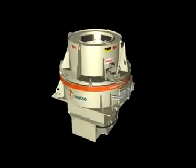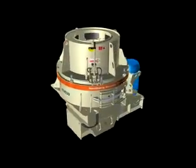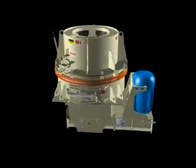What sets the Nordberg Barmak B-Series VSI apart from other types of crusher is that it uses rock to crush rock.